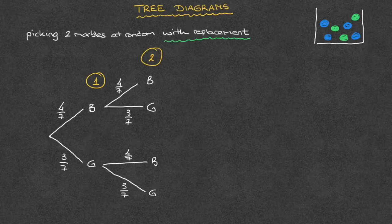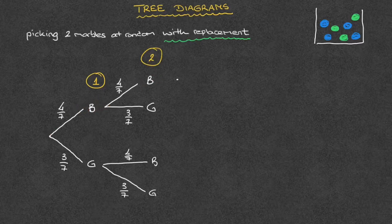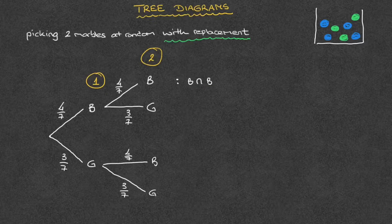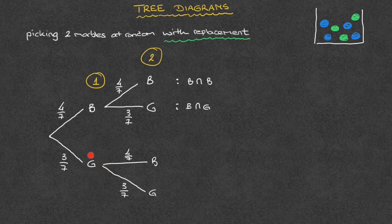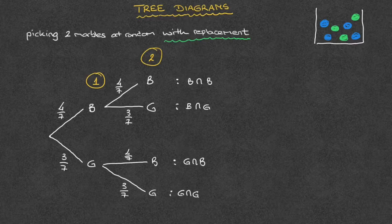One thing this tree diagram allows us to do is list all of the possible outcomes of the experiment. Starting from the far left and moving along the branches, we can identify all outcomes. Moving along the top branch, we could have blue followed by blue — the event blue and blue. The next possible outcome is blue followed by green — blue and green. Then green and blue. And finally, we could have green followed by green — the event green and green. We've now listed all possible outcomes of this experiment.